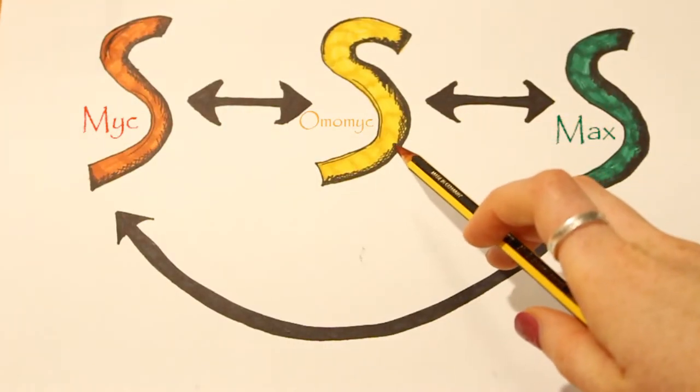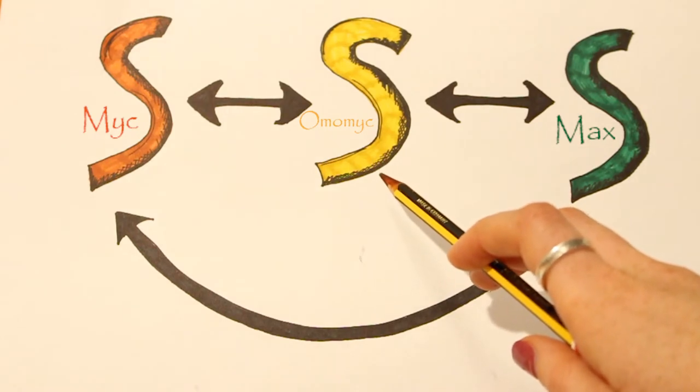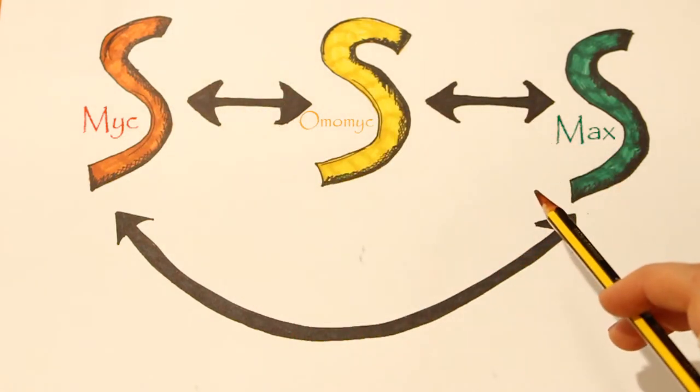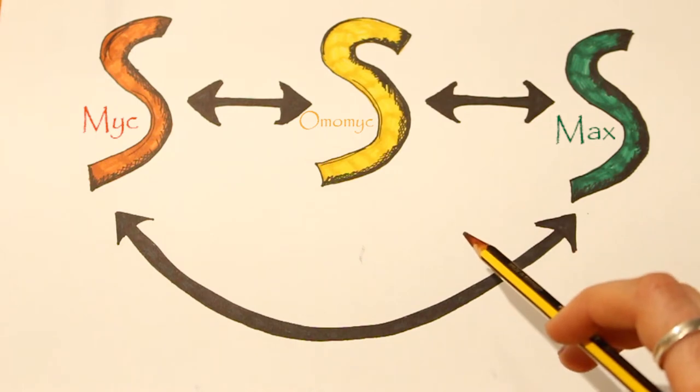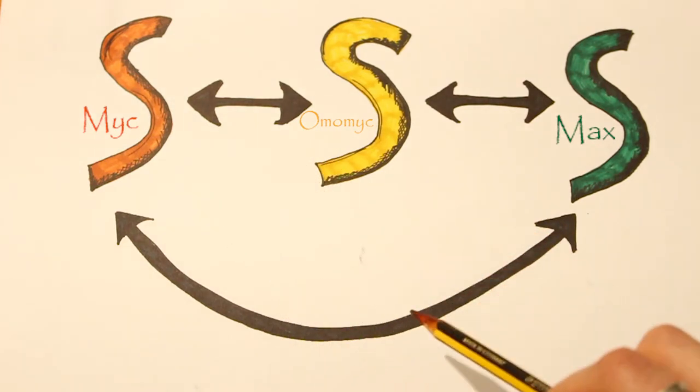The suspect, omamic, is a man-made protein that can bind to both myc and max. It causes tumors to shrink by blocking myc. But how does it do this?